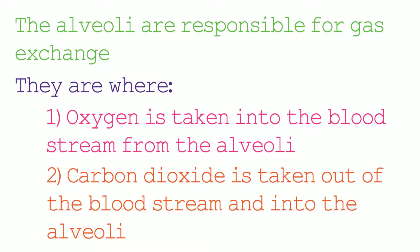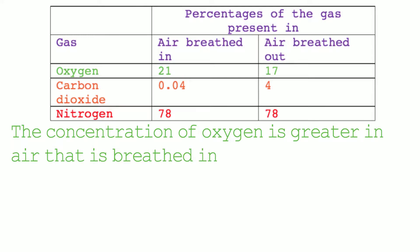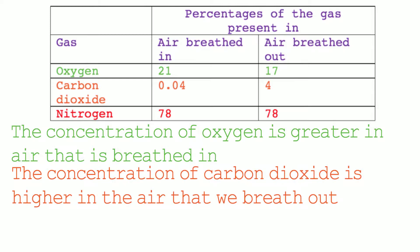As the alveoli are responsible for gas exchange, the composition of air that we inhale and exhale are different. From the table we can see that the concentration of oxygen is greater in air that is breathed in compared to air that is breathed out. This is because oxygen is taken into the bloodstream in the alveoli. Also we see that the concentration of carbon dioxide is higher in the air that we breathe out compared to the air that we breathe in. This is because our cells are undertaking respiration reactions and a byproduct of these respiration reactions is carbon dioxide.